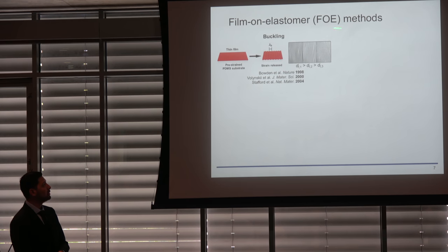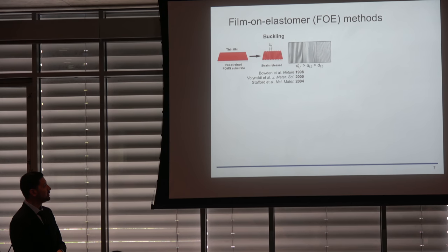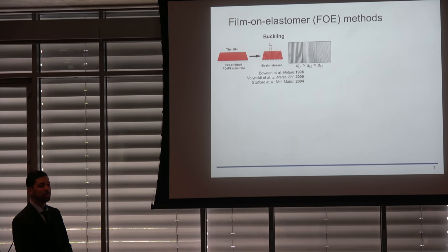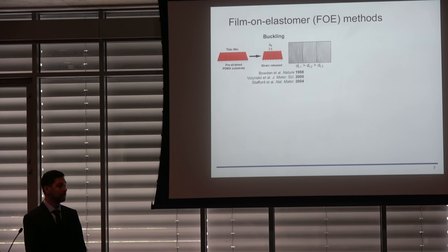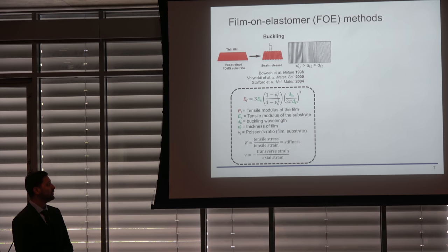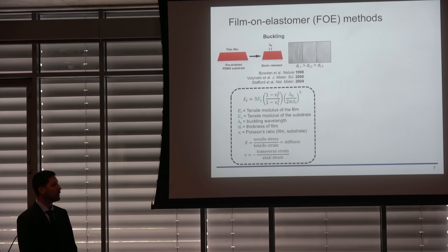We collectively call these film-on-elastomer methods, where thin films are supported by elastomers to extract mechanical properties. The first technique is mechanical buckling, first demonstrated by Whiteside and Hutchinson in 1998 and perfected as a metrology technique by Stafford in 2004. In this method, thin films are laminated onto pre-strained elastomeric PDMS substrates. Upon releasing the strain, a buckling instability forms surface wrinkles. Knowing the film thickness and buckle wavelength, along with the elastic modulus of the substrate and Poisson's ratios, you can extract the elastic modulus of the film.